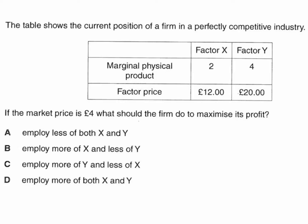The table shows the current position of a business in a perfectly competitive industry — in other words, every unit they sell will have the same market price, and we're told the market price is £4. We're given information on the marginal physical product of each factor of production, X and Y, and also the cost of employing the factors. Factor X will cost £12 to employ, and Factor Y will cost £20 to employ. If the market price is £4, what should the firm do to maximise its profit?